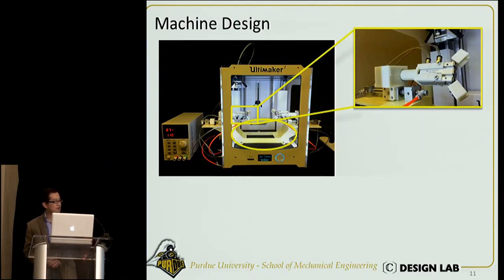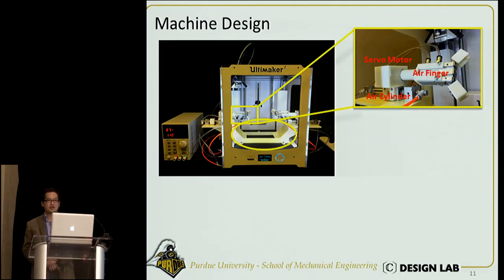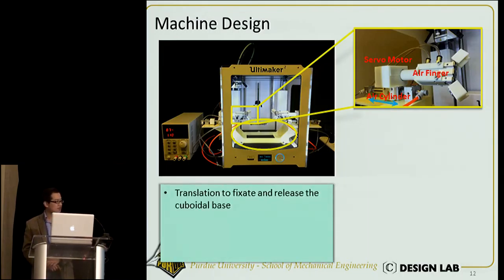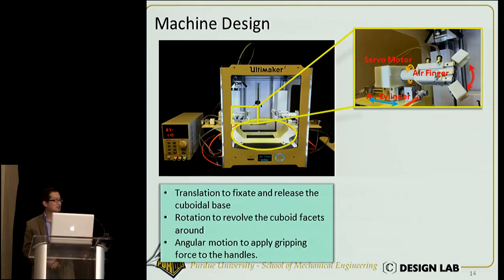We put two air cylinders onto the two plates, and upon these two air cylinders we mount two servos connected with two air fingers. There are three degrees of freedom for this mechanism: the first is translation, to fix and release the cuboid base; the second is rotation, to revolve the cuboid facet; and the third is an angular motion, to apply gripping force to the handles.